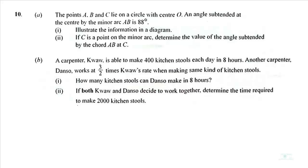Question 10A. We will solve the B part too. Let's solve the A part first. The points A, B and C lie on a circle with center O. An angle subtended at the center by the minor arc AB is 88 degrees. Illustrate the information in a diagram.